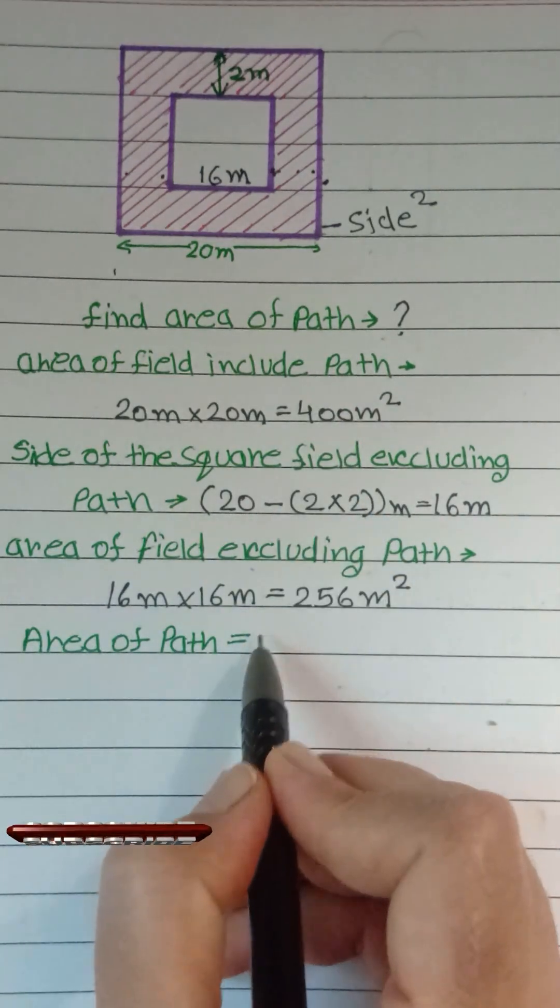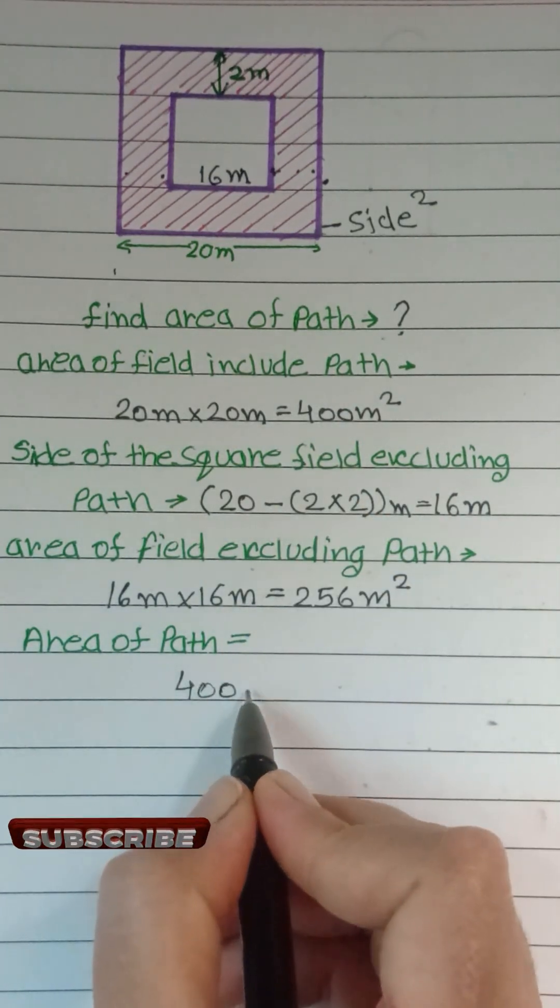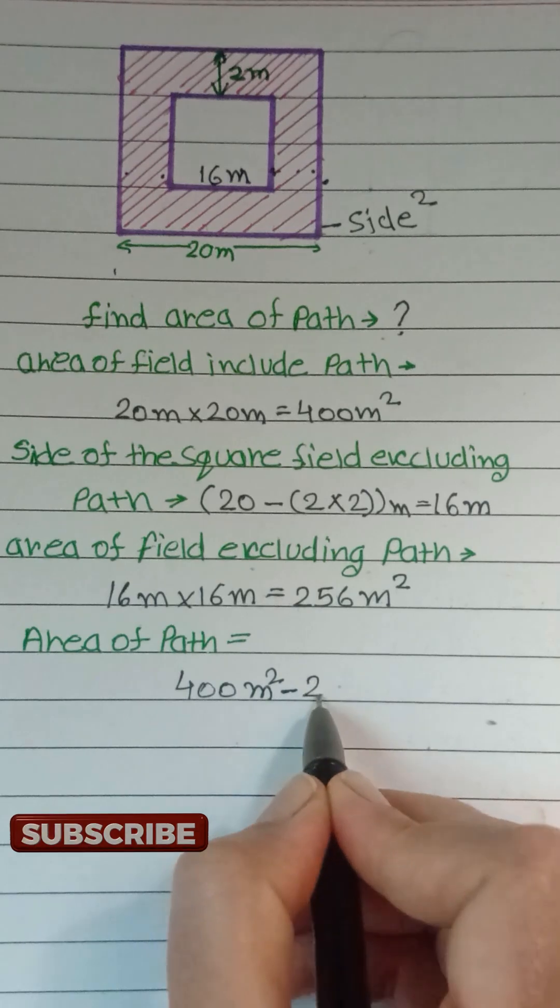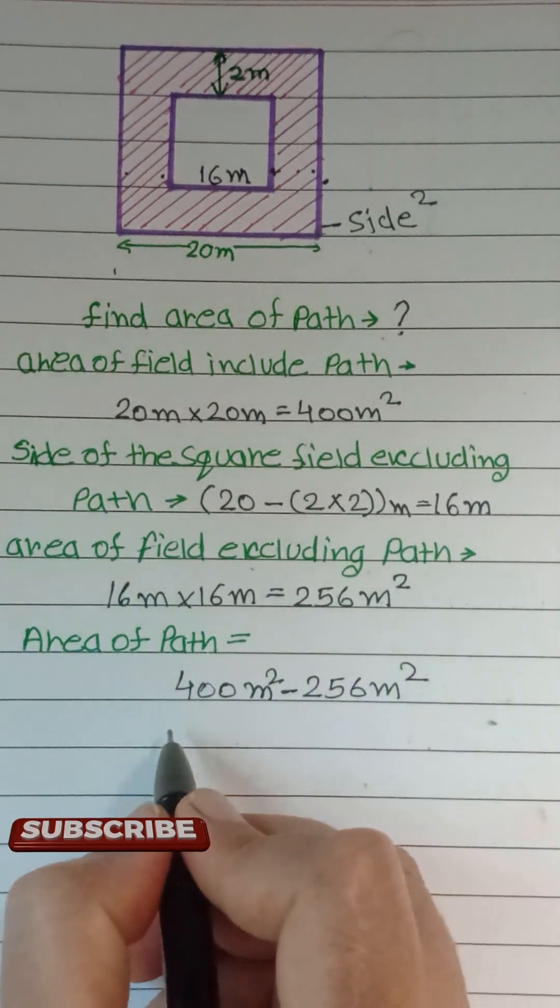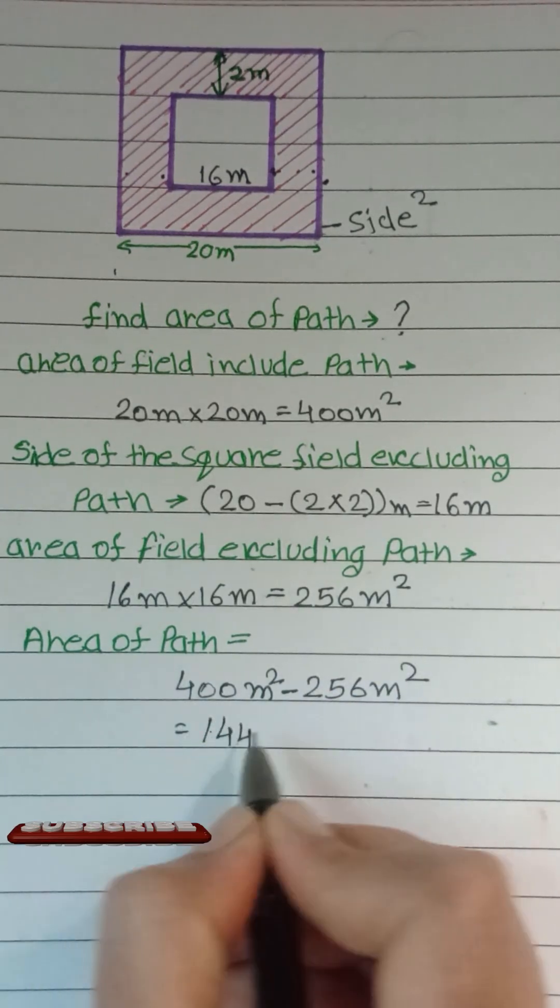Area of path we get by difference of area of both fields. 400 minus 256 meter square. Area of path is 144 meter square. This is our answer.